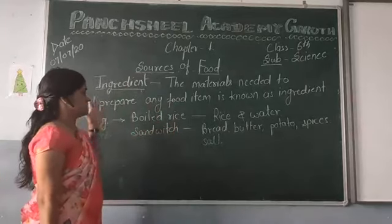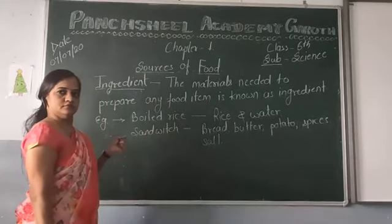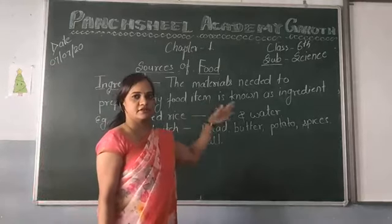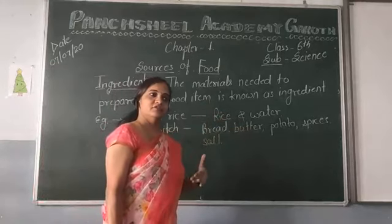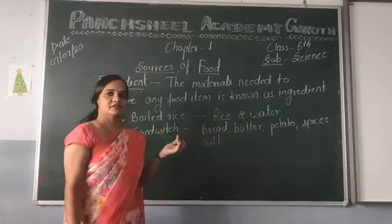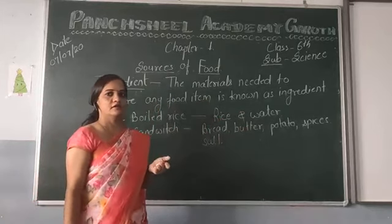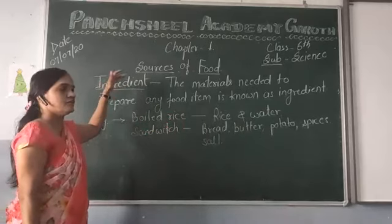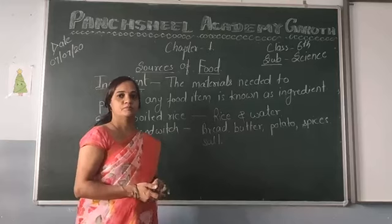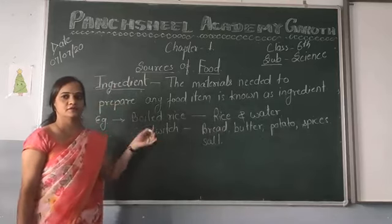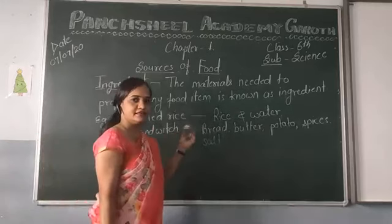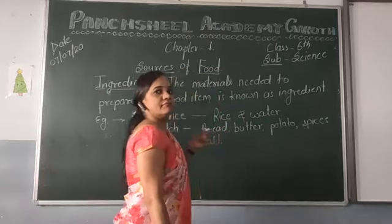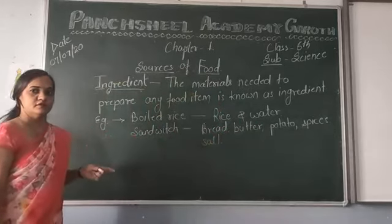For example, if we have to eat rice, we require rice and water. It means for preparing rice, rice and water are the main ingredients. Such materials needed to prepare any food item are known as ingredients. An ingredient is the main item needed to prepare any food item.